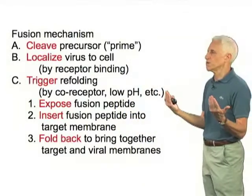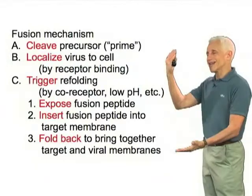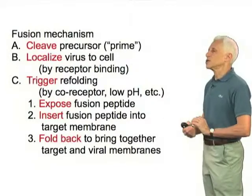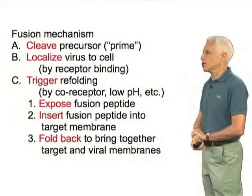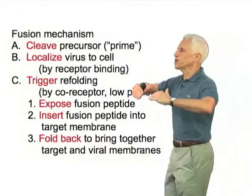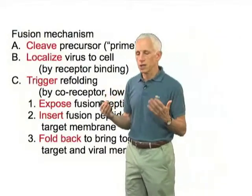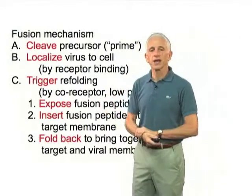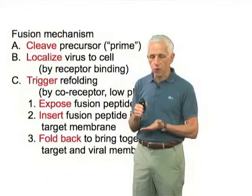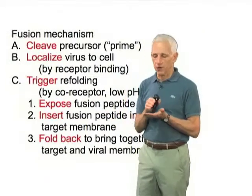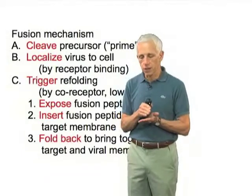Exposure of the fusion peptide — that's the extended intermediate — insertion of the fusion peptide into the target membrane, and a folding back of the protein that brings together the target and viral membranes. And it is that folding back that overcomes the first of the kinetic barriers.